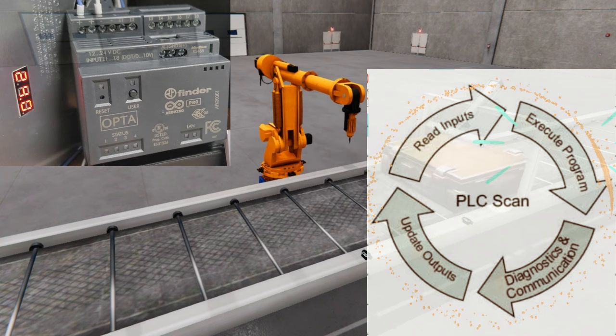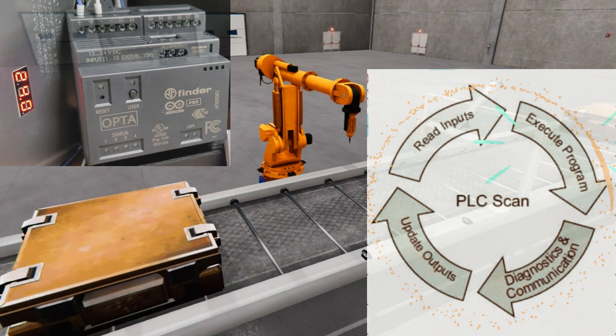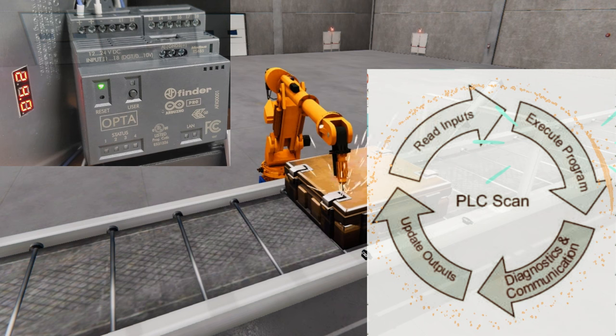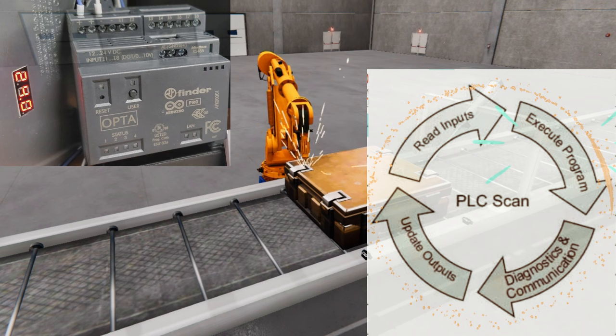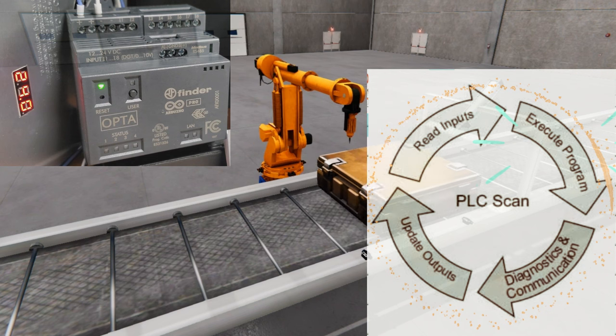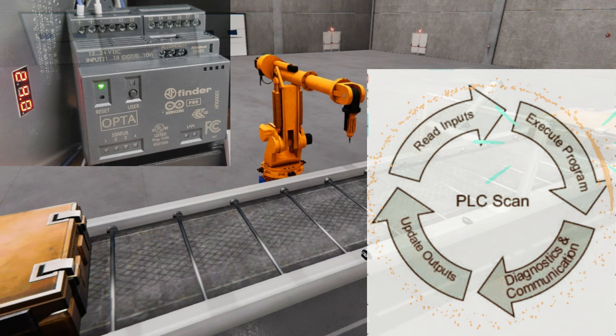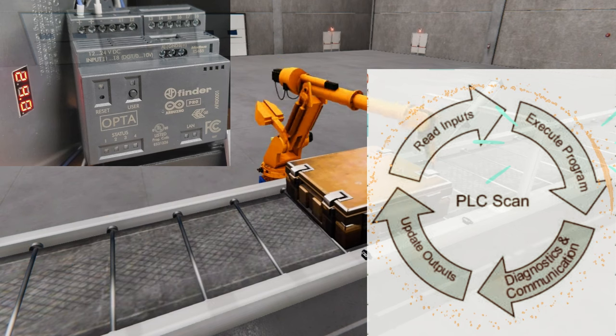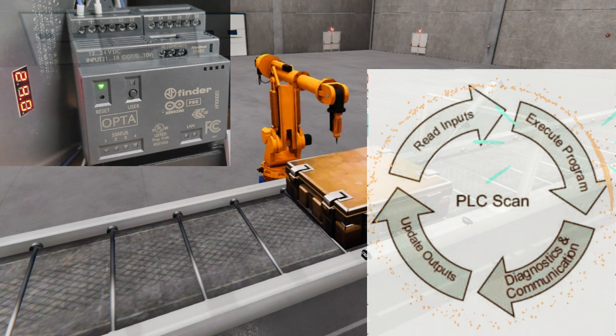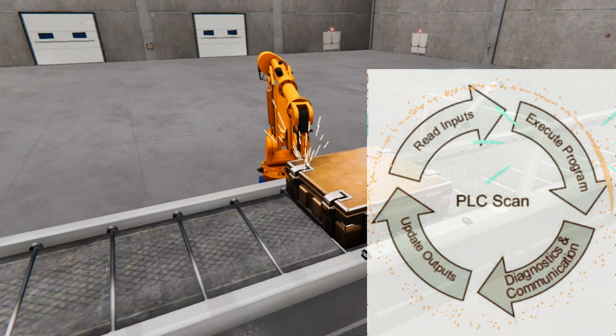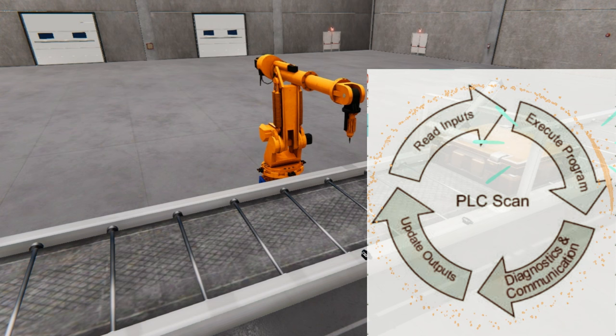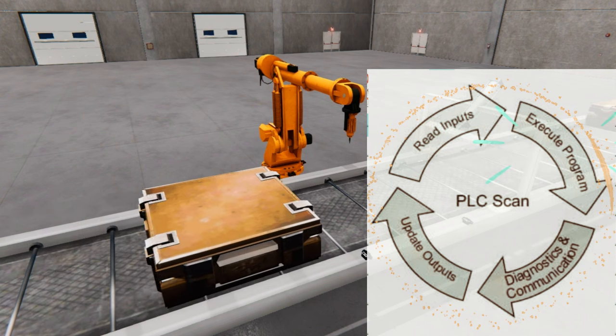The operation of a PLC revolves around four fundamental stages: scanning of inputs, executing programs, diagnostics and communication, and updating of outputs. Initially, in the input scan stage, the PLC assesses the condition of the inputs. During the following program scan stage, it puts the previously written control program in its memory into action. Diagnostics will ensure that PLC memory and devices are working correctly. Communication will be handled to other devices or within the controller itself. Lastly, at the output scan stage, it updates the output's conditions depending on the operational inputs and the program embedded in its memory. Scanning happens cyclically, meaning this operation happens several times per second.